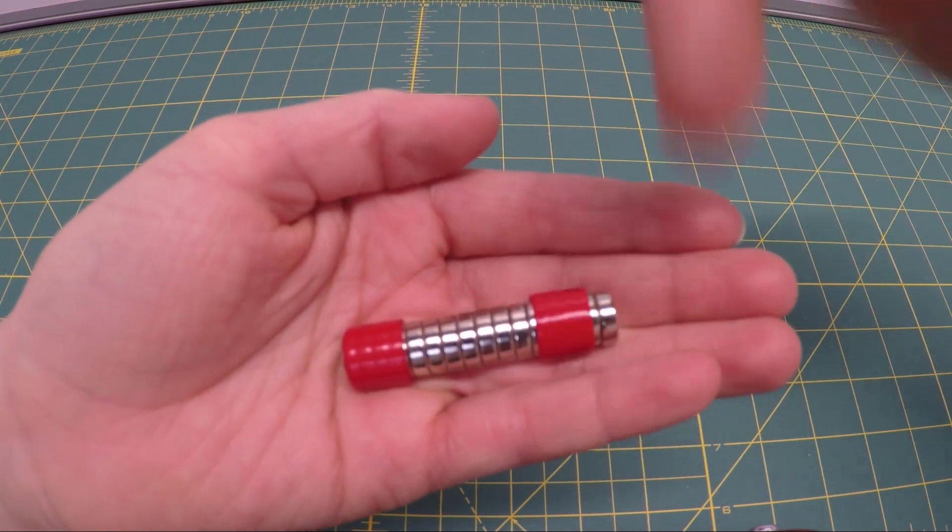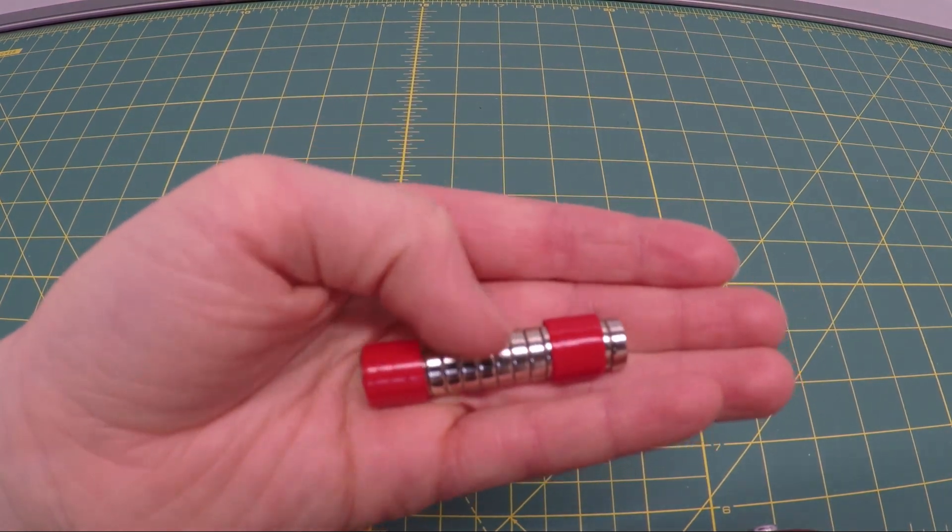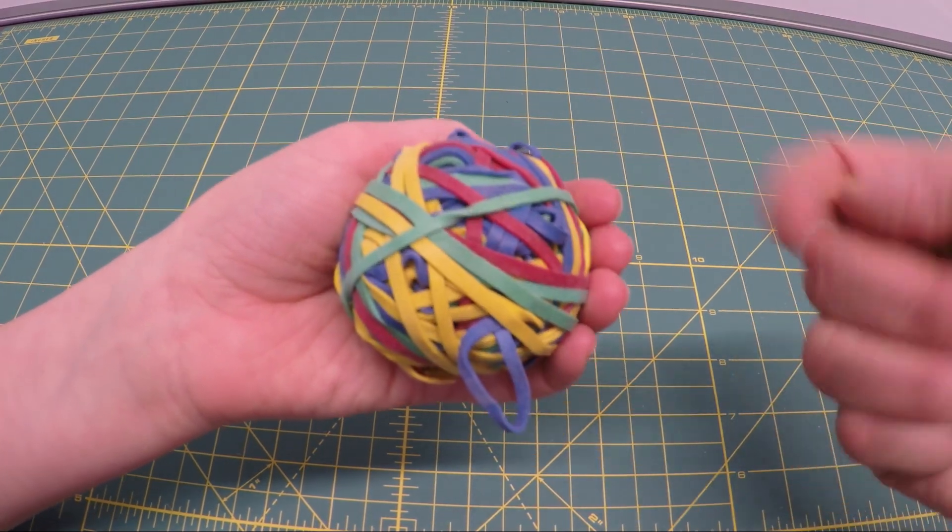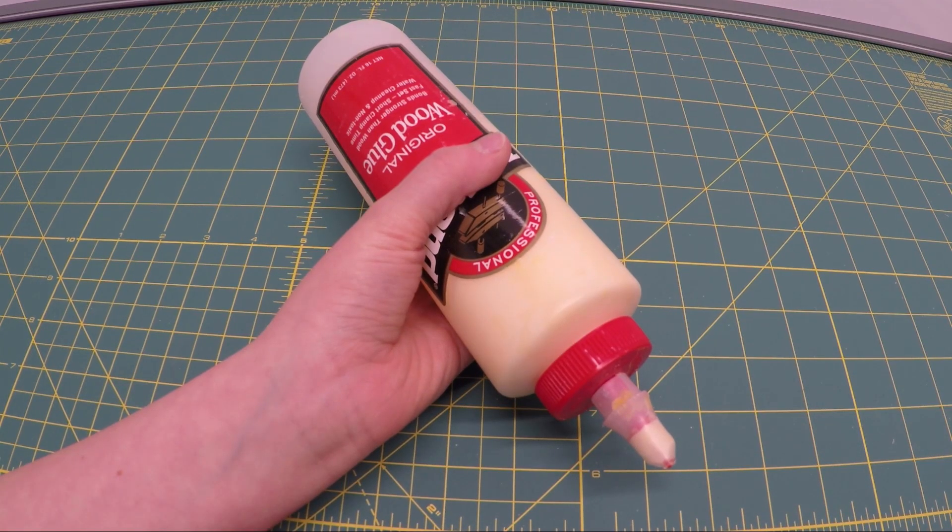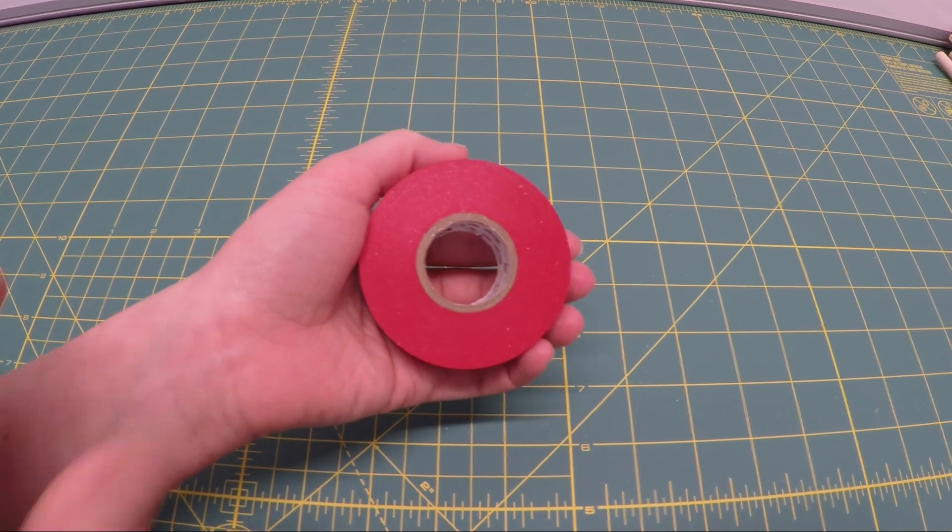I will post links to the super magnets and the ball bearings below. A handful of rubber bands, this just happens to be in a ball. Your favorite brand of wood glue and some electrical tape or tape of any kind.